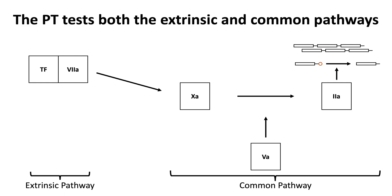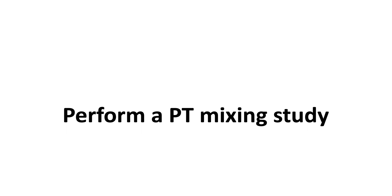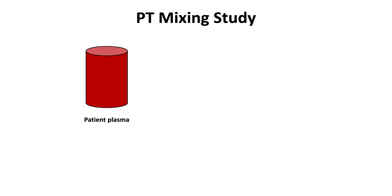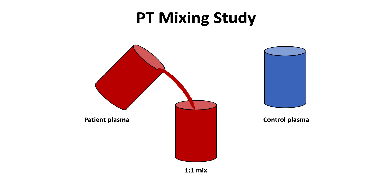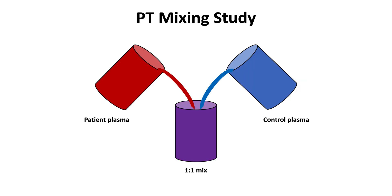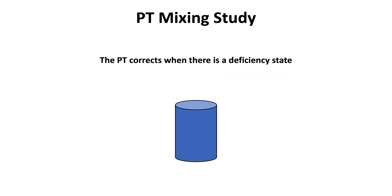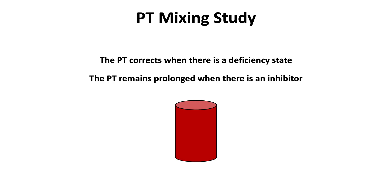In this way, the PT tests both the extrinsic and common pathways. To evaluate a prolonged PT, first perform a PT mixing study. The PT mixing study combines patient plasma with a prolonged PT and control plasma with a normal PT in a one-to-one mix. The PT corrects when there is a deficiency state, and the PT remains prolonged when there is an inhibitor.